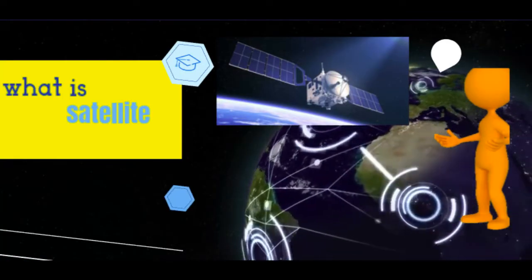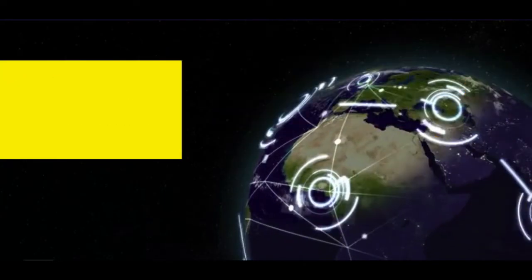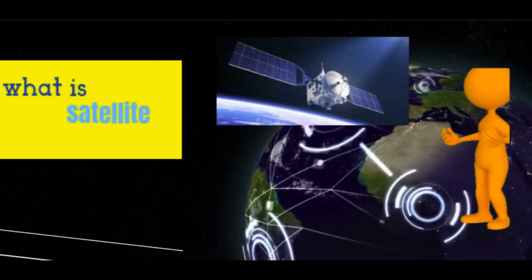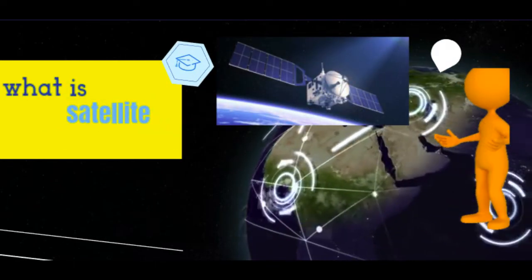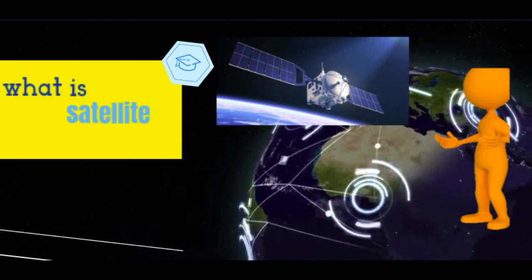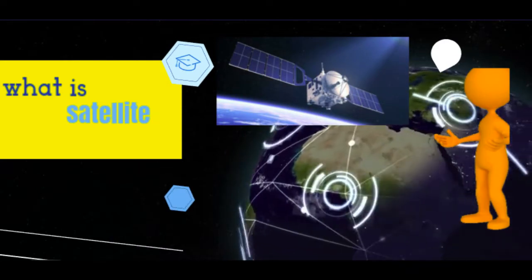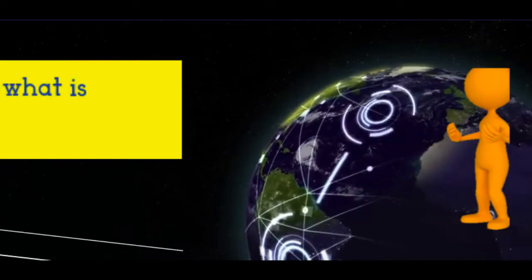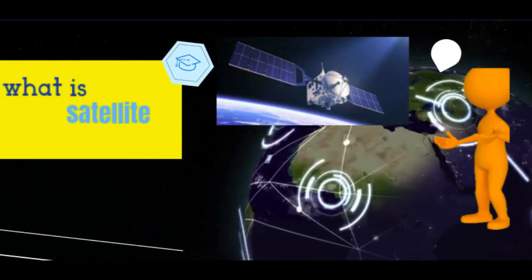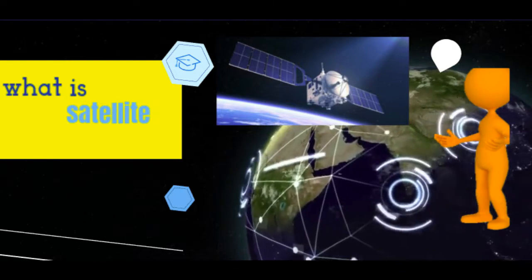What is a satellite? A satellite doesn't necessarily have to be a tin can spinning through space. The word satellite is more general than that - it means a smaller space-based object moving in a loop or orbit around a larger object. The moon is a natural satellite of Earth, for example, because gravity locks it in orbit around our planet.